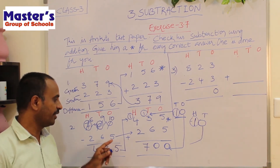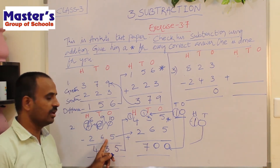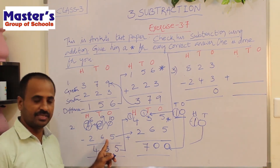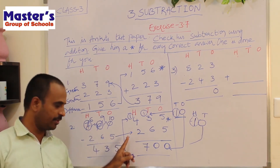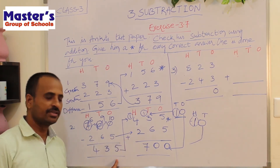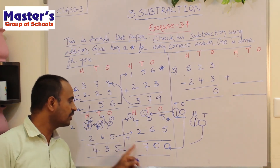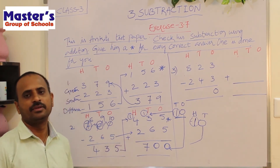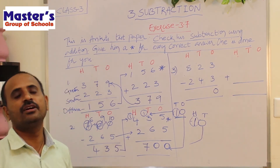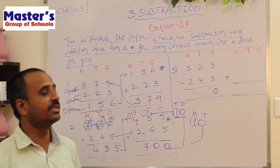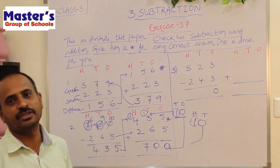Because if we add the smaller number — the second number — to the difference, we have got the first number. So in this way we can verify our answer and check our subtraction.